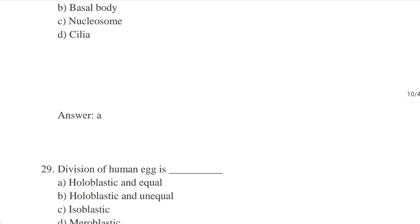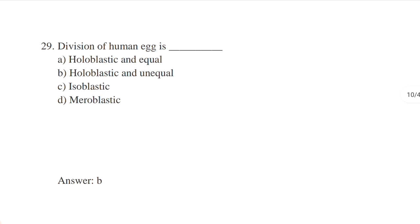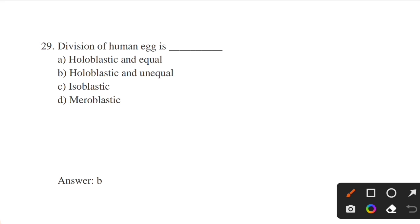Division of the human egg is which type? Options: holoblastic and equal, holoblastic and unequal, isoblastic, meroblastic. Answer: option B — holoblastic and unequal. Holoblastic cleavage is seen in eggs containing a moderate to sparse amount of yolk. It is the complete division of isolecithal and microlecithal eggs into blastomeres.